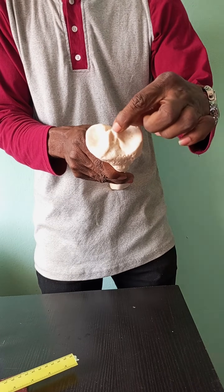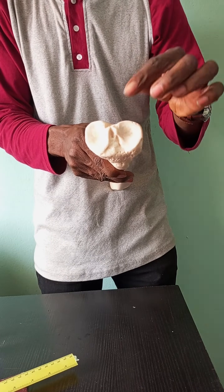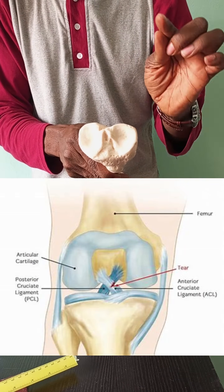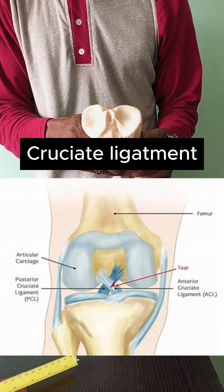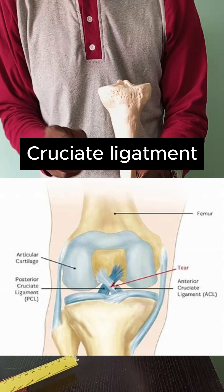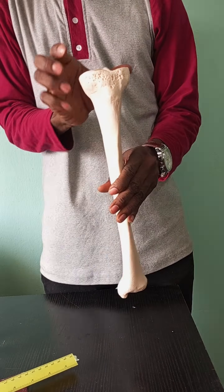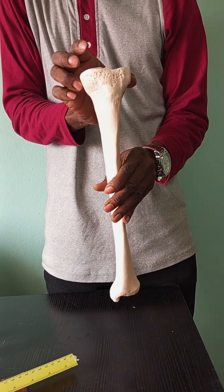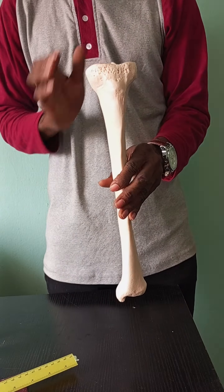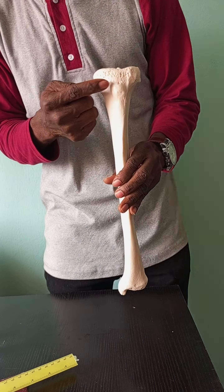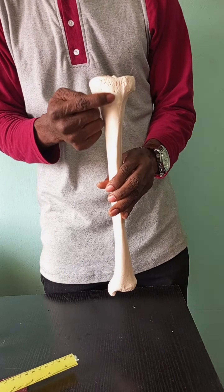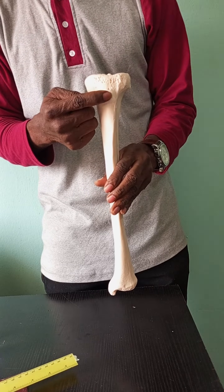This intercondylar eminence is what gives rise to the cruciate ligaments as the femur rests on it. Now, below this broad head that gives rise to the lateral and medial condyles, we have a protrusion called the tibial tuberosity.